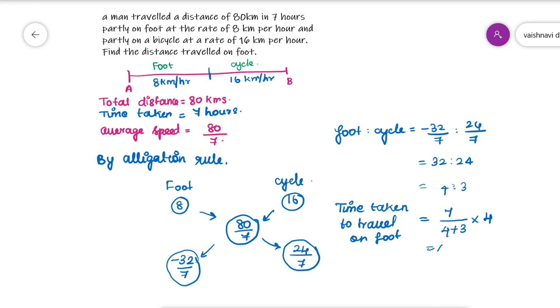So time taken to travel on foot alone is 4 hours. Therefore, the distance is speed into time: 8 into 4 equals 32 kilometers.